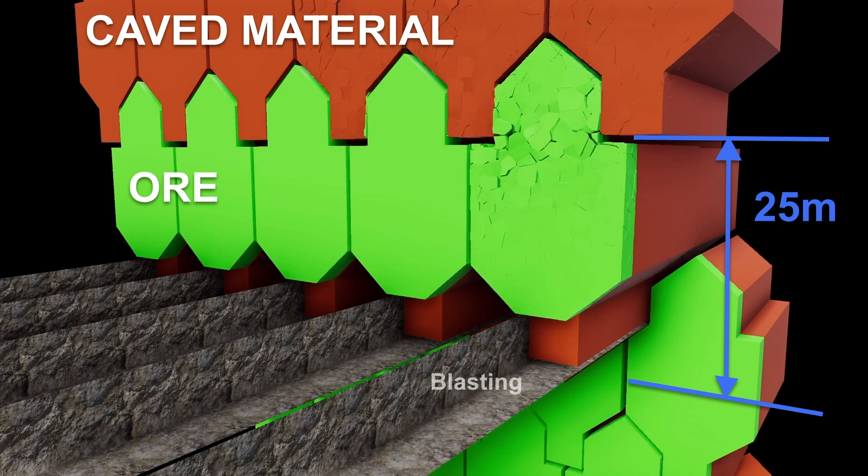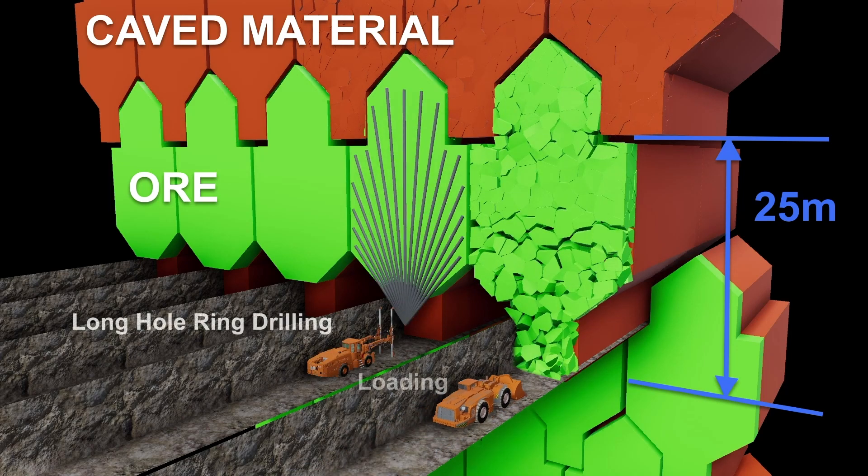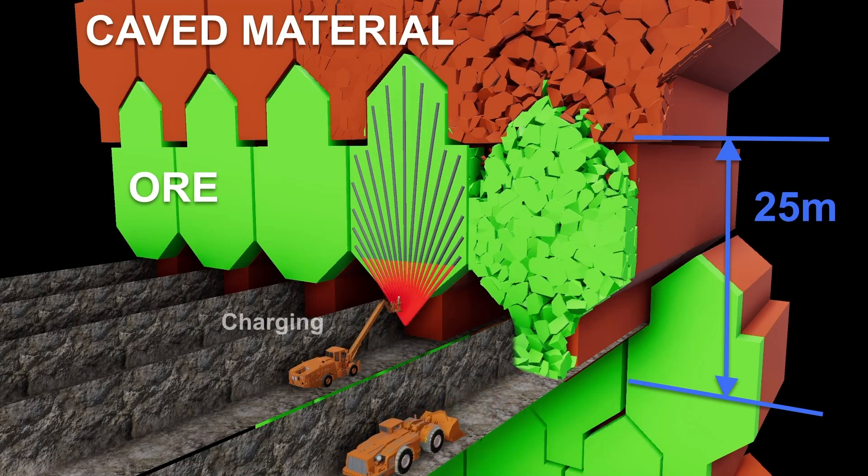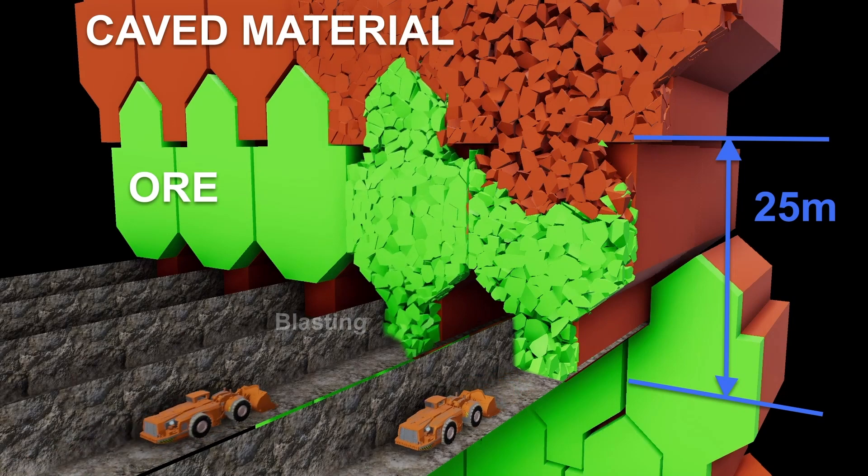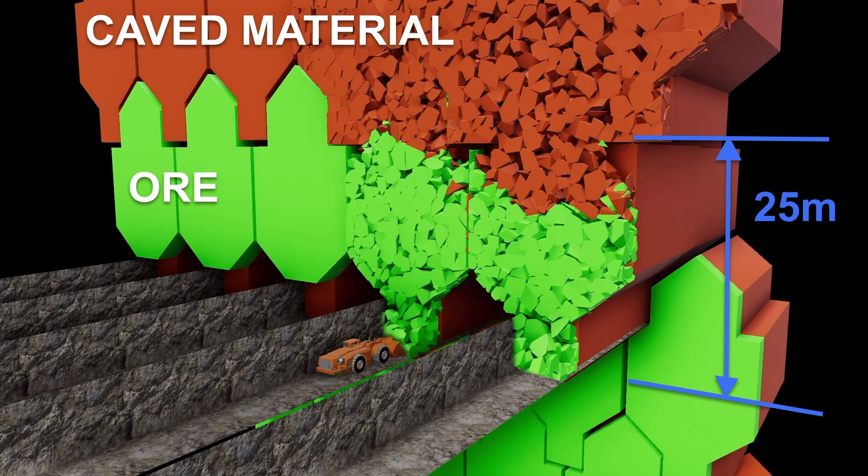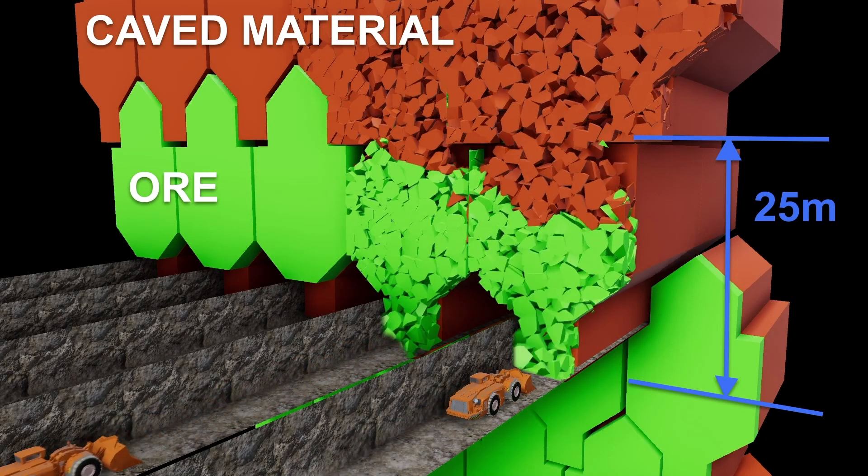From each of the cross cuts developed across the ore body, blast holes are drilled using autonomous drill rigs. Pre-charging using best-in-class explosive technology will remove personnel from hazardous work areas while de-risking output.